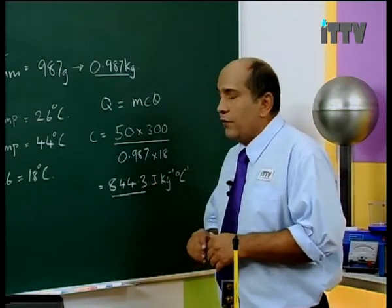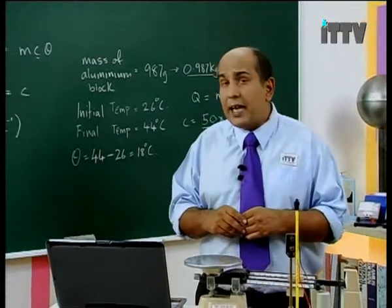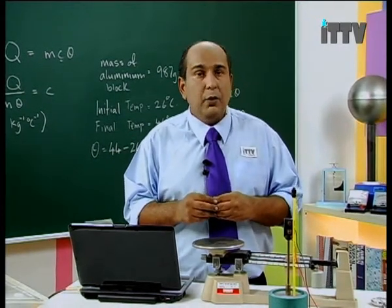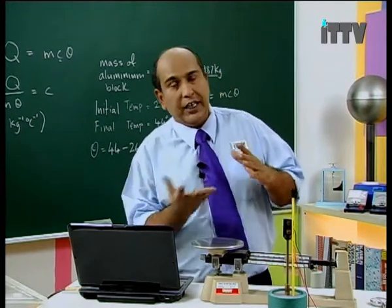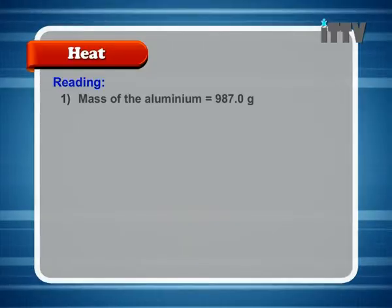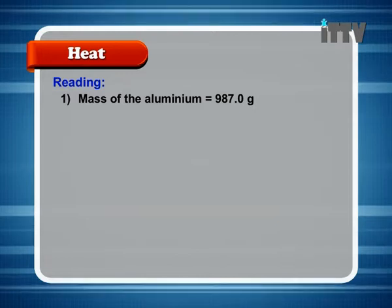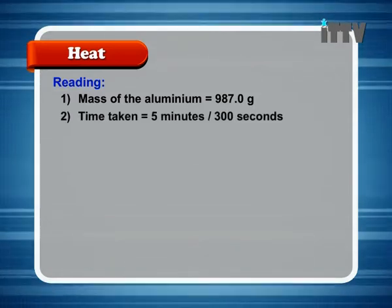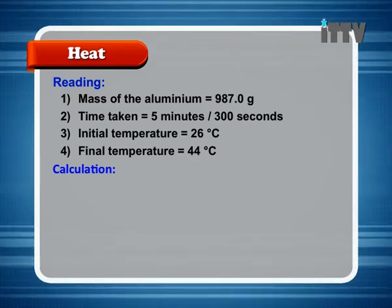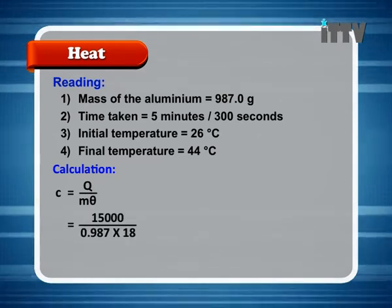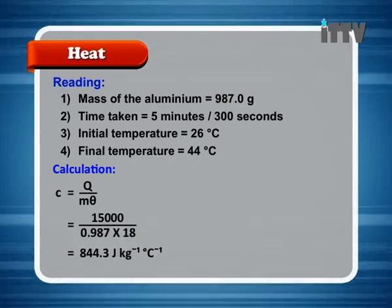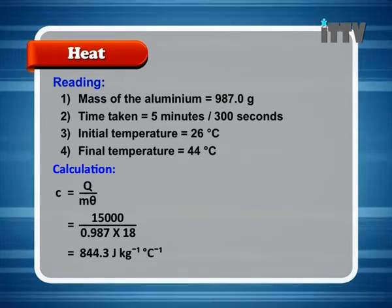That is very close to the actual value. The real value is 900. But it's very hard to get the real value because there's always going to be some heat lost to the surroundings. We can try to make it more accurate by putting a jacket over the top and bottom to reduce heat loss. So the mass was 987 grams, the time taken was 5 minutes or 300 seconds, initial temperature 26, final temperature 44, and C equals 15,000 divided by 0.987 times 18, giving us 844.3 J kg⁻¹ °C⁻¹.